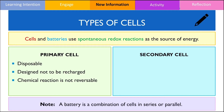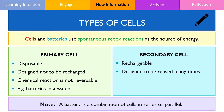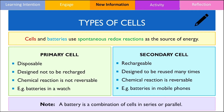An example of a primary cell would be the battery commonly found inside a watch. On the other hand, secondary cells are defined as rechargeable cells and can be discharged and reused multiple times. This is because the redox reactions inside a secondary cell can be reversed, which means you have the capacity to regenerate and restore your starting materials again. An example of a secondary cell would be the battery found inside a mobile phone.